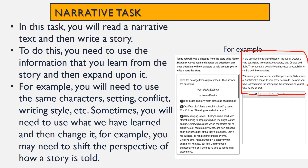Over here, you can see in the passage from Magic Elizabeth, the author creates a vivid setting and two distinct characters: Mrs. Chipley and Sally. Think about the details the author uses to establish the setting and characters. Write an original story about what happens when Sally arrives at Aunt Sarah's house. In your story, be sure to use what you've learned about the setting and characters as you tell what happens next. Notice you need to use the characters and the settings and put them together to make sure it's kind of like a chapter two — it follows the story that we already have.